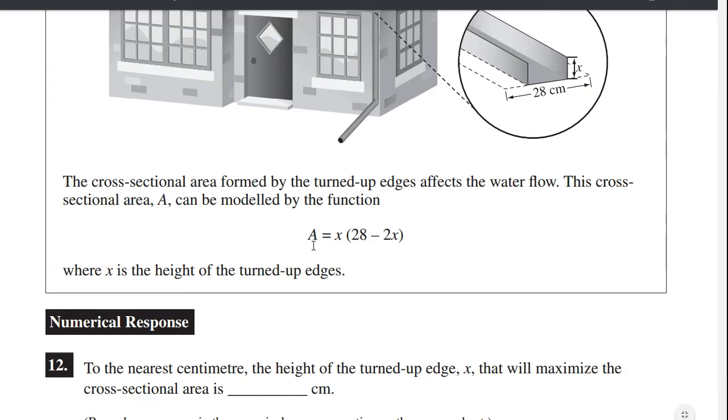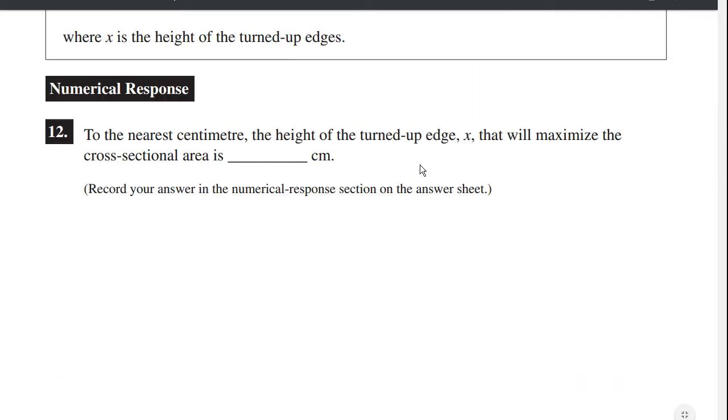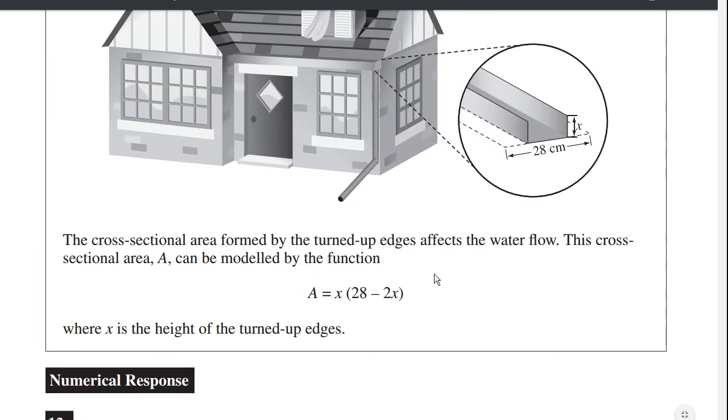The cross sectional area is A equals x times 28 minus 2x, where x is the height of the turned up edges. To the nearest centimeter, the height of the turned up edge x that will maximize the cross sectional area is how many centimeters? So how do we figure this out?